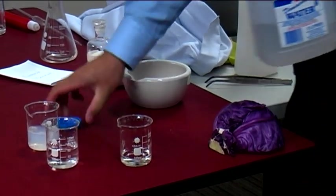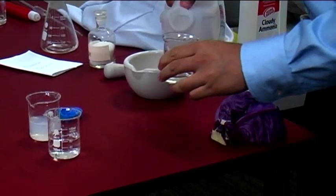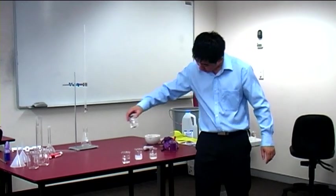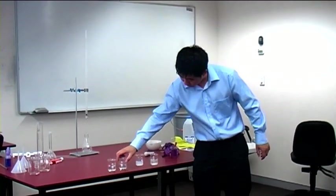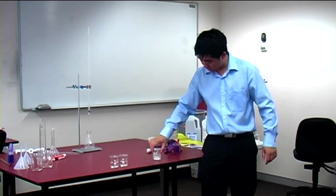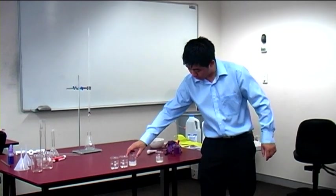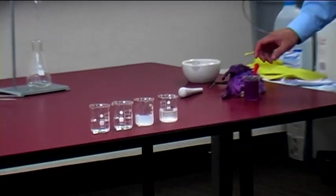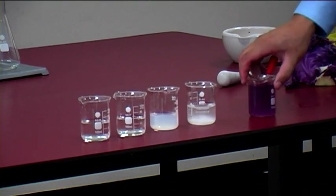So let's arrange it according to increasing acidity. Right. I would guess that dilute sulfuric acid would still beat vinegar in acidity, and the most basic would be the dissolved drain cleaner. So, acidic to basic. Let's see what happens when we add the anthocyanin to it.